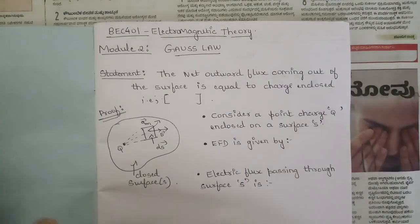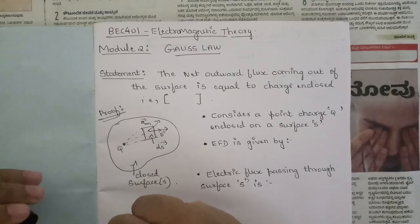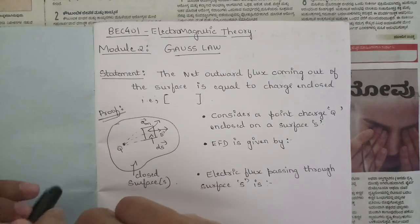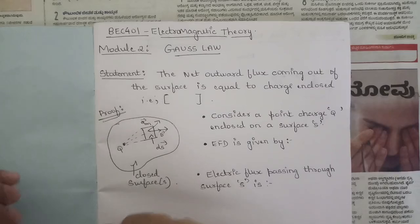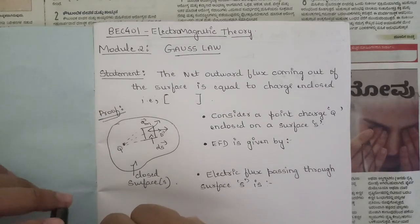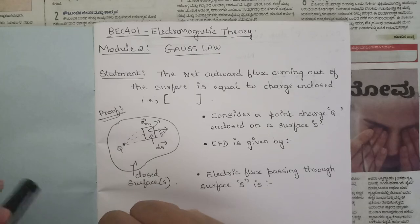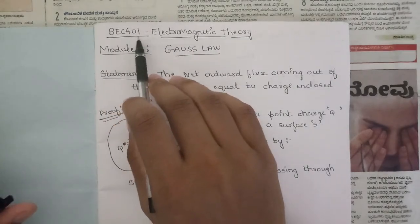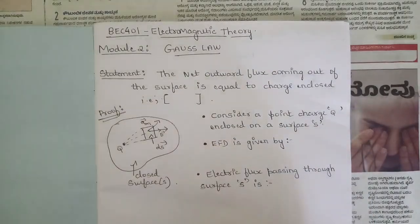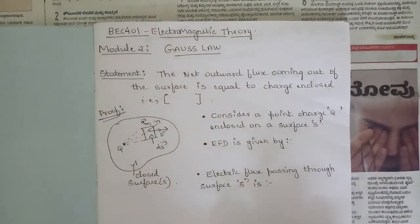Welcome to this new session. I'm going to continue with the second module. The first module already covered Coulomb's law. The second module of this subject, BEC 401, subject code electromagnetic theory, is related to Gauss's law.